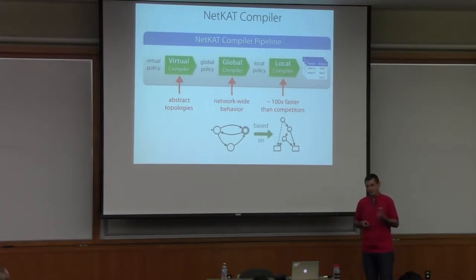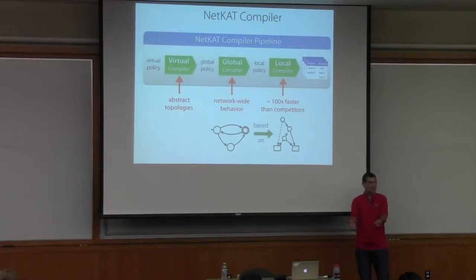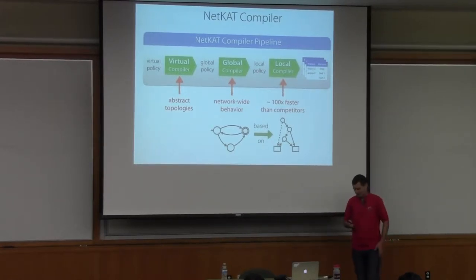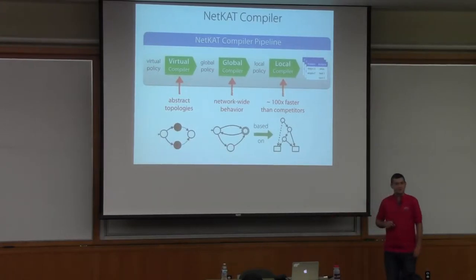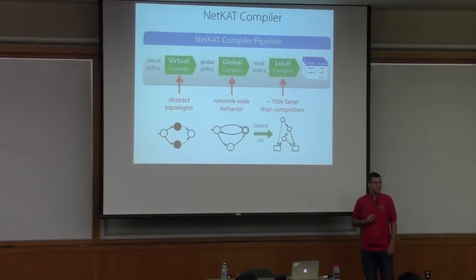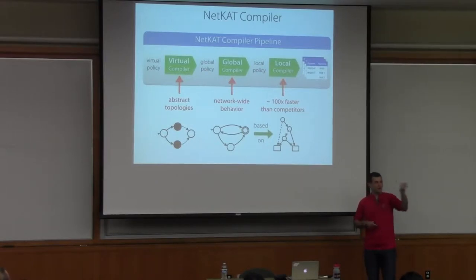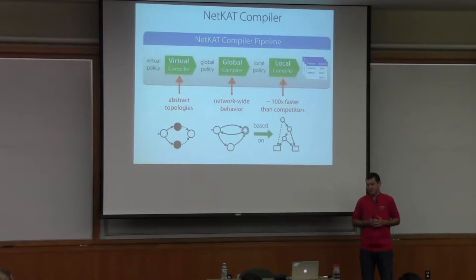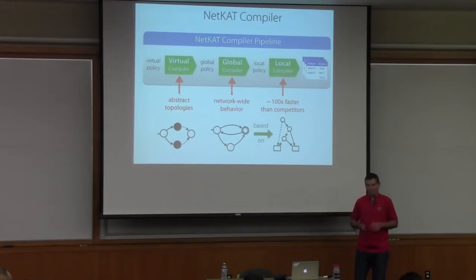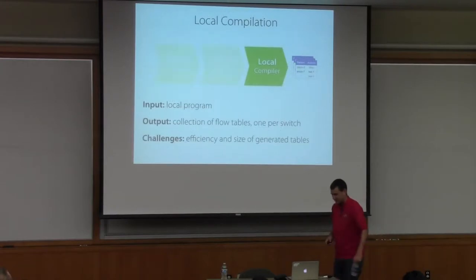The global compiler uses the automata we developed last time. We produce the automata representation of our program, and the states of that automaton become explicit values carried throughout the network—we compile the automata into the network. The virtual compiler uses a synthesis approach: we formulate finding an implementation of a virtual program as a two-player game. One player is the virtual network program moving packets around; the other is the physical network that must match those moves. We use standard algorithms for winning strategies in two-player games to synthesize physical paths that correctly implement the program.